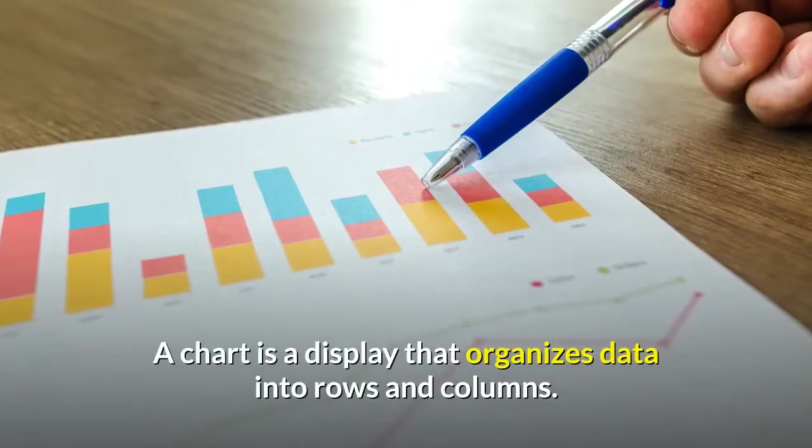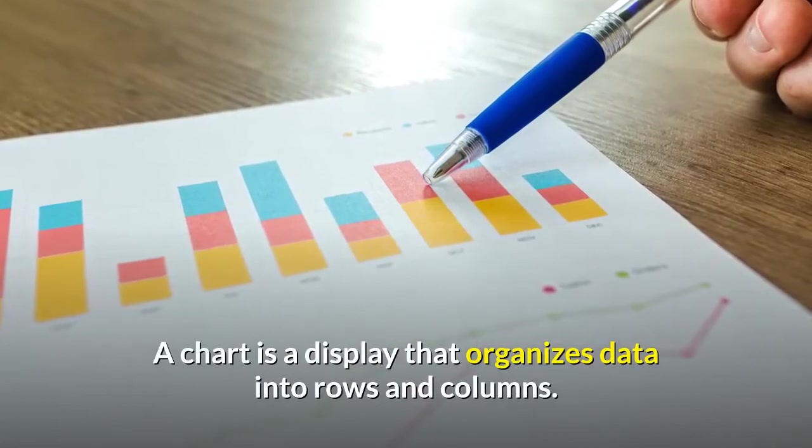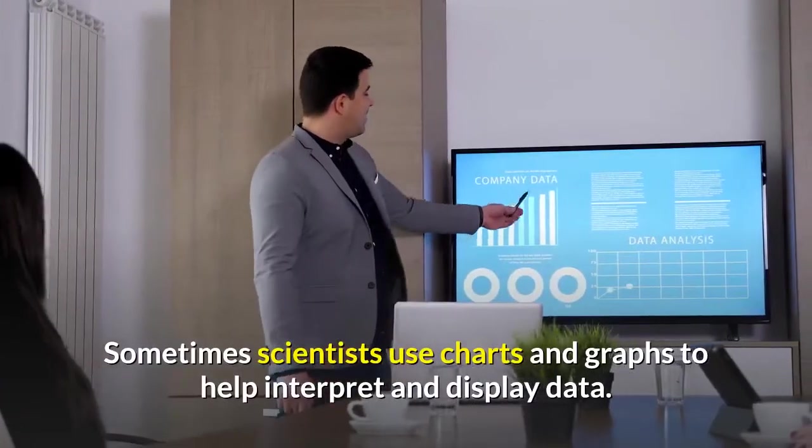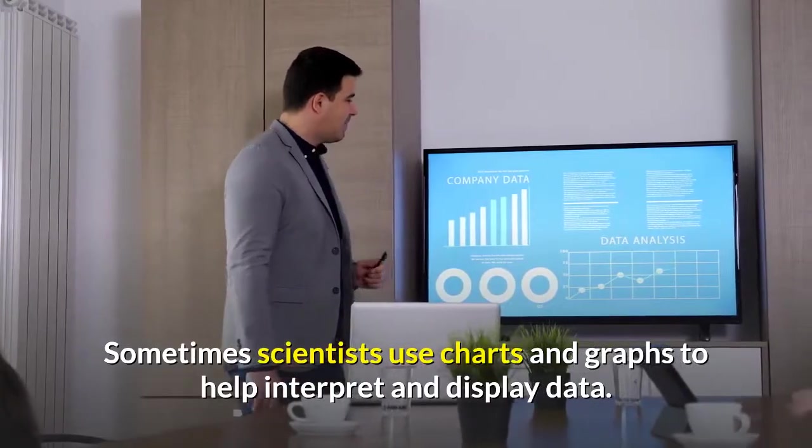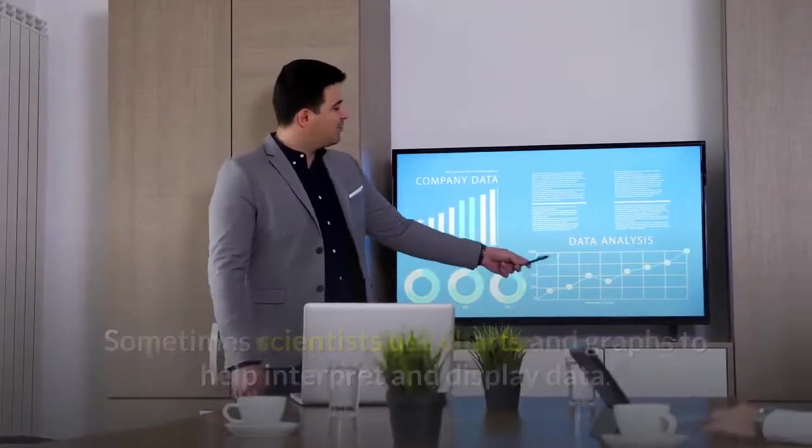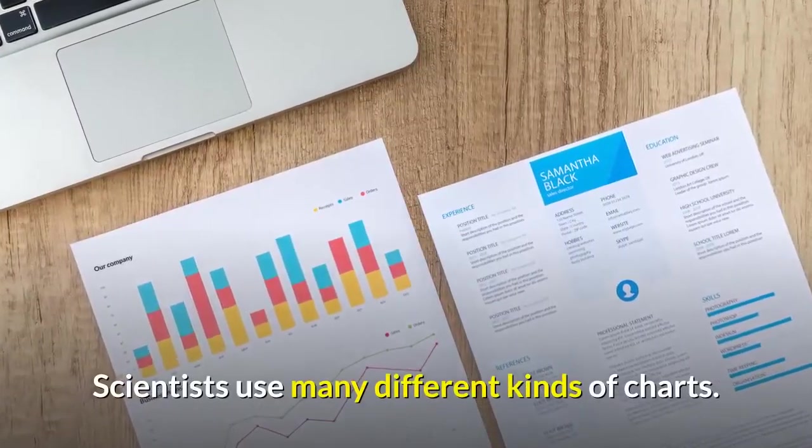A chart is a display that organizes data into rows and columns. Sometimes scientists use charts and graphs to help interpret and display data. Scientists use many different kinds of charts.